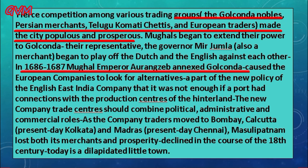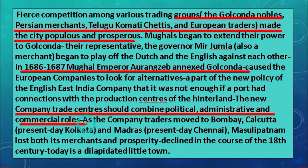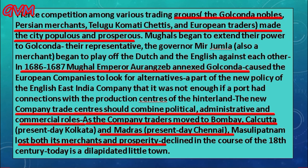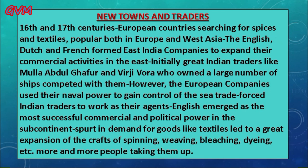Later in the 17th century, the Mughals started extending their power to Golconda, and in 1686–87 the Mughal emperor Aurangzeb conquered Golconda. The East India Companies then devised a new policy combining political, administrative, and commercial roles in new trading centers. As the company traders moved to Bombay, Calcutta, and Madras, Masulipatnam lost both its importance and its prosperity, and declined in the course of the 18th century. Today it is a dilapidated little town.